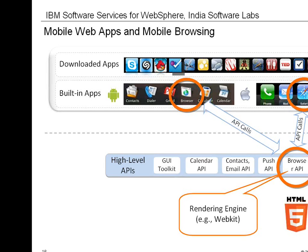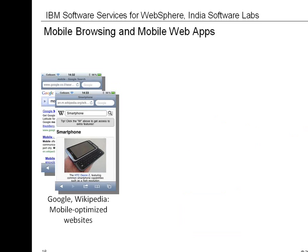Just like native apps, let's start with having a look at a few examples of web apps. You're all familiar with mobile browsing. This is the most trivial use of the browser, and I'm sure you've all seen mobile-optimized websites, such as both operated by Google, and Wikipedia.